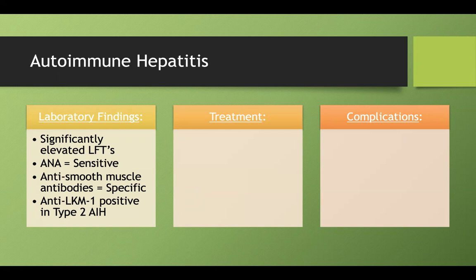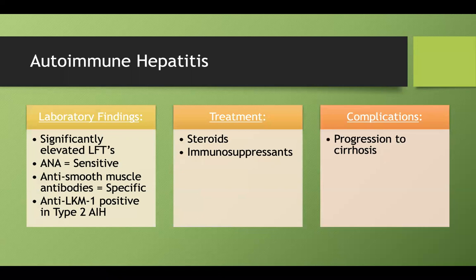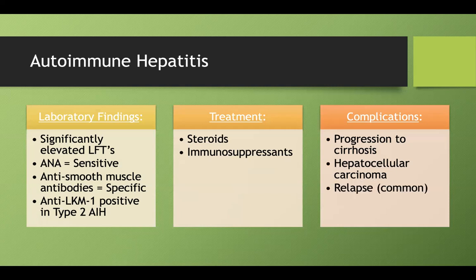Treatment is steroids or immunosuppressants, since it's an autoimmune condition. Complications include progression to cirrhosis, which can ultimately lead to hepatocellular carcinoma. As with most autoimmune conditions, you also run the risk of relapse.